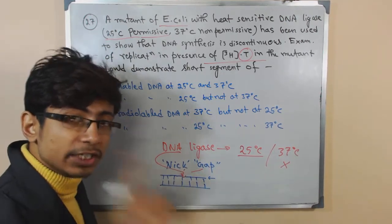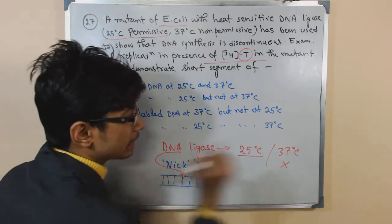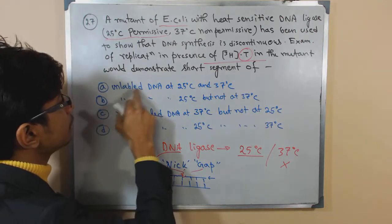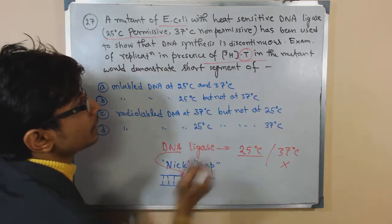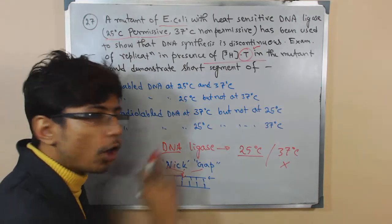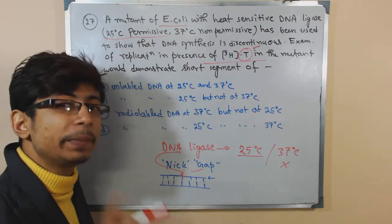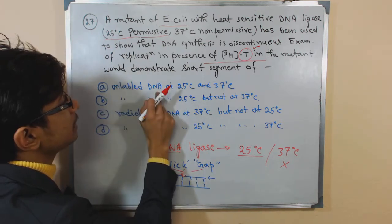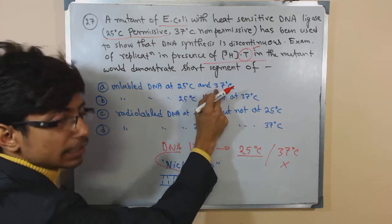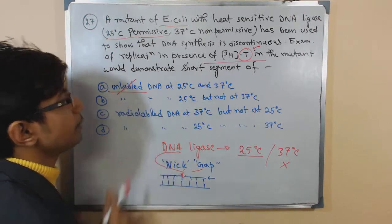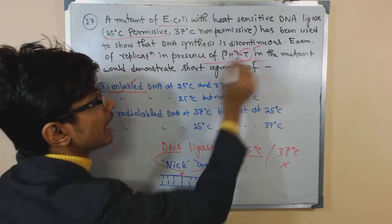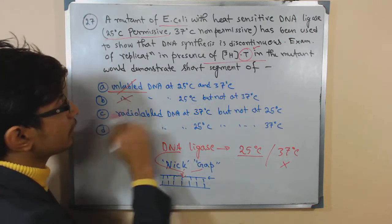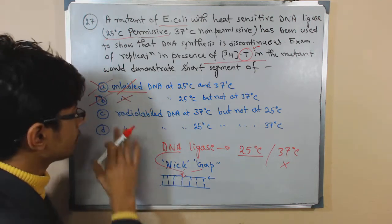So the discontinuous DNA will be seen at 37 degrees Celsius temperature, not 25 degrees Celsius. And obviously, as we are talking about radiolabeled thymine, all the DNA strands that we start to find in that plate will be radiolabeled. So here comes the first conclusion: unlabeled DNA at 25 degrees and 37 degrees. It is not true, because unlabeled definitely will not work. Because thymine is radiolabeled, so obviously we will find radiolabeled. Second one is also unlabeled, so I just cut those two things out.